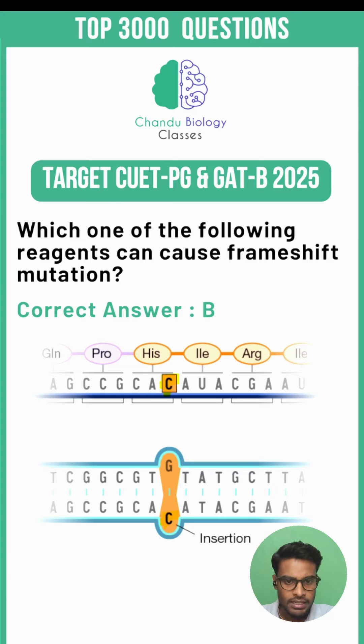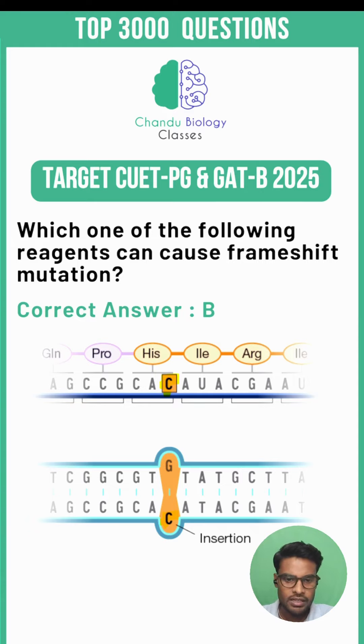When the DNA is replicated, the presence of ethidium bromide can lead to the addition or deletion of nucleotides, which may result in a frameshift mutation.